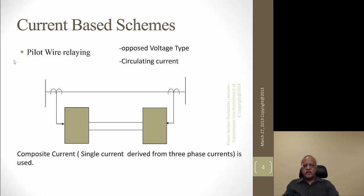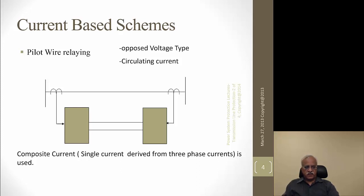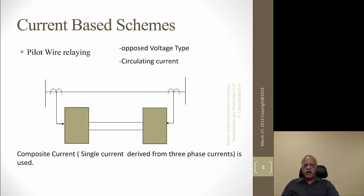In pilot wire schemes there are two types: opposed voltage type, where voltage is generated based on currents at the remote end and they look at how they are balanced; or the circulating current principle. As mentioned, it could also use composite current — a combination of all three phase currents — and only one composite current is sent from station A to station B. Station B also sends similar information back to station A.